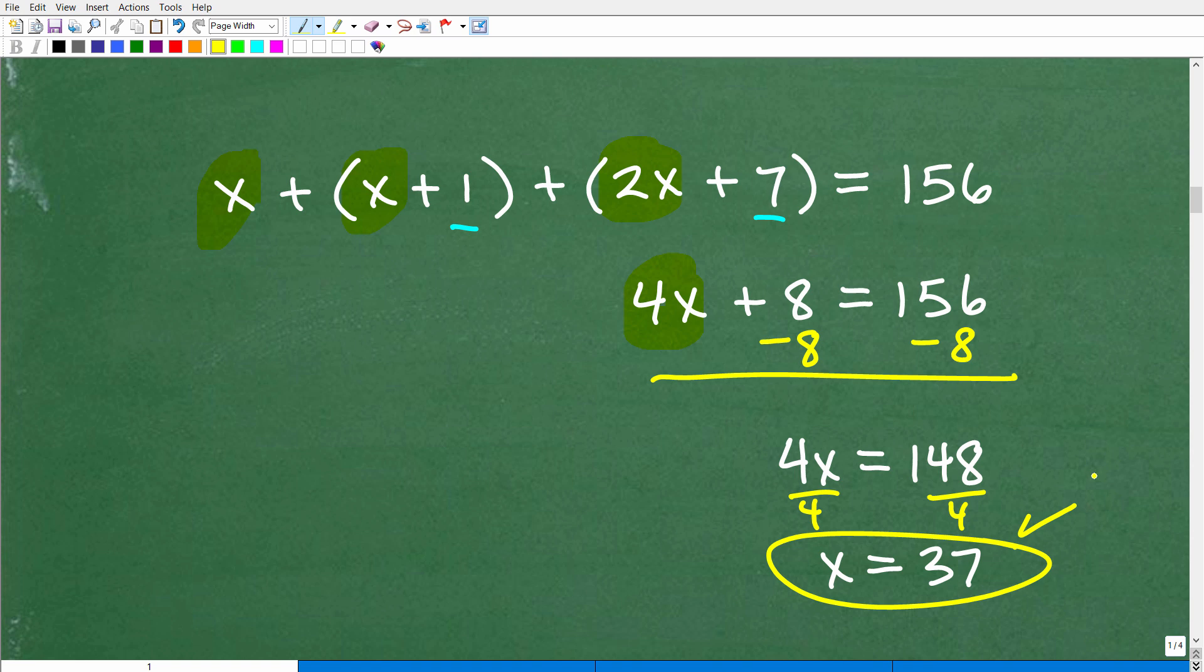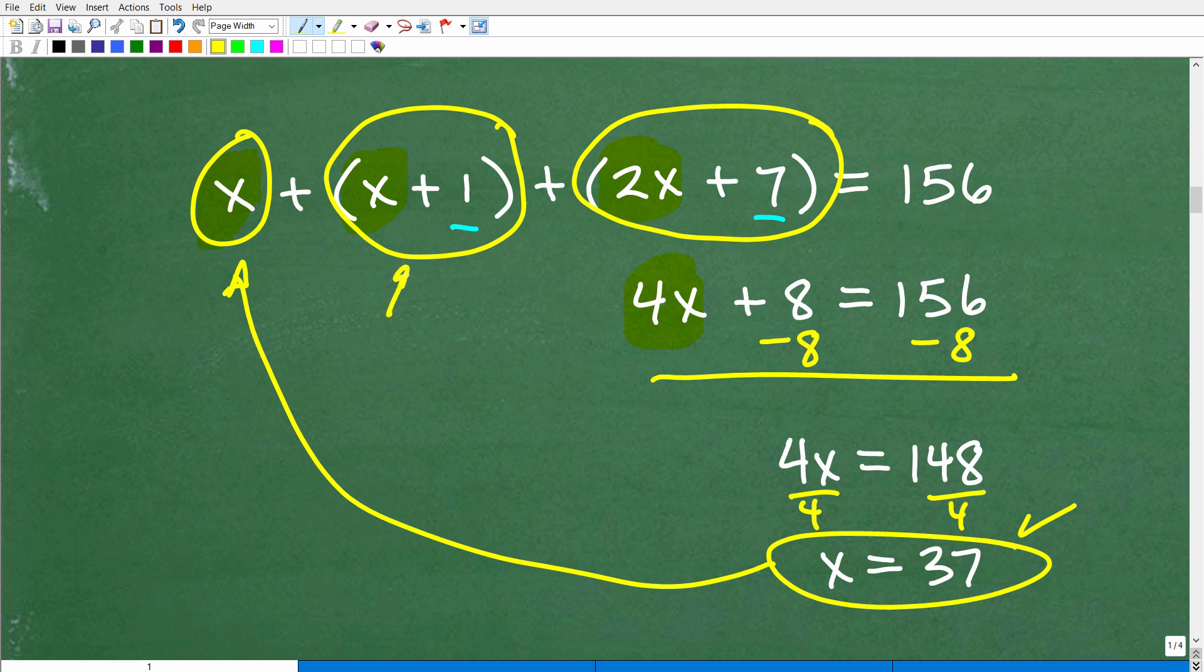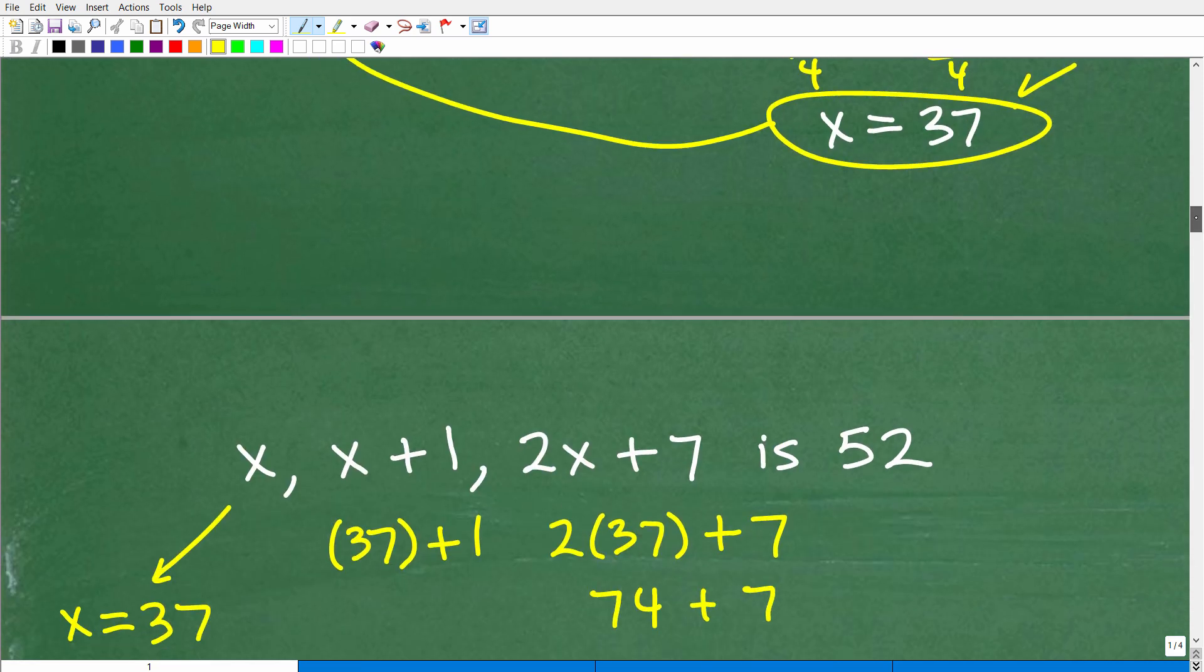Okay, so what does that mean, though? Well, remember, we have three numbers. One was x. The other was x plus 1. And the other number was 2x plus 7. So we just found our first number, 37. Okay, so that's one of the numbers. To get this number, it's just going to be 37 plus 1. That's 38. And then we can figure this out as well. So let me show you that work right now.